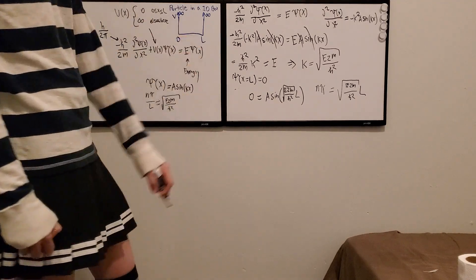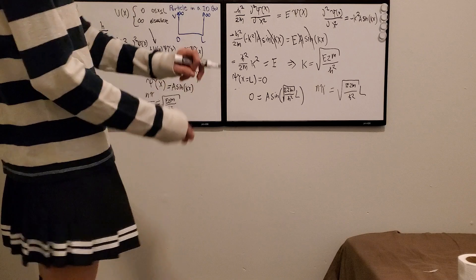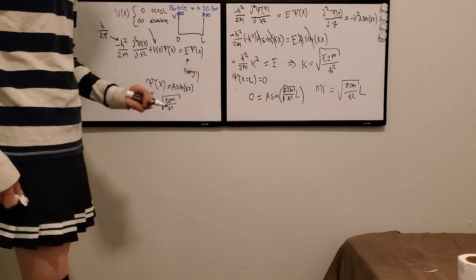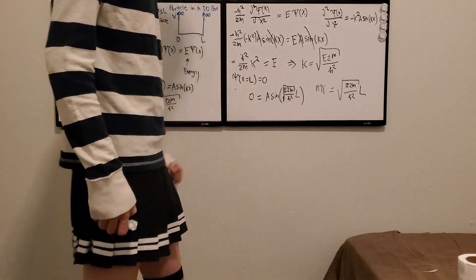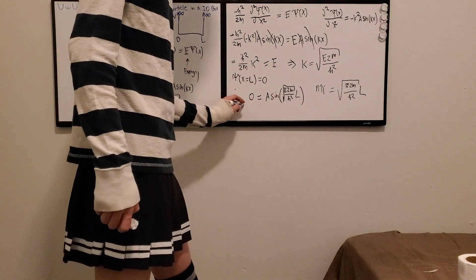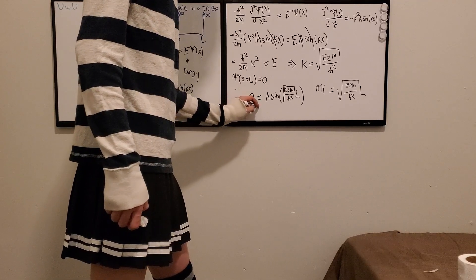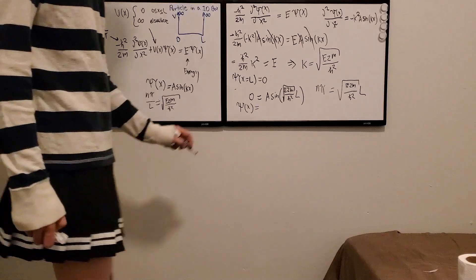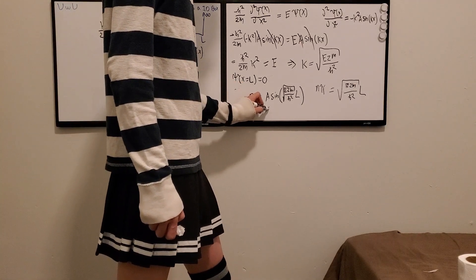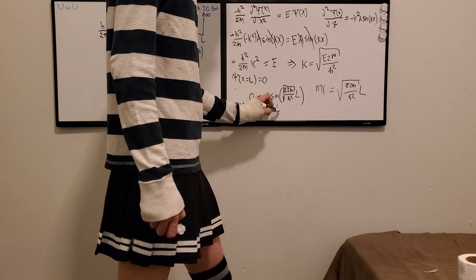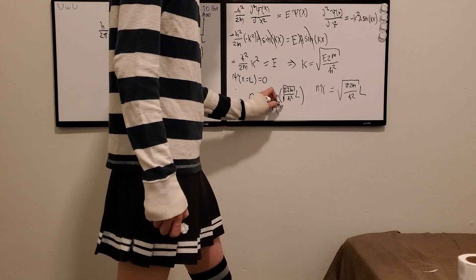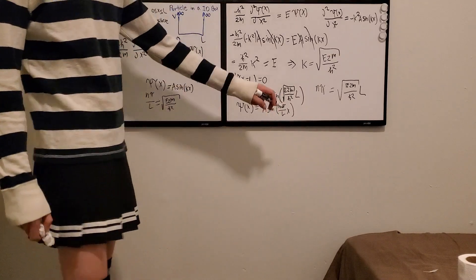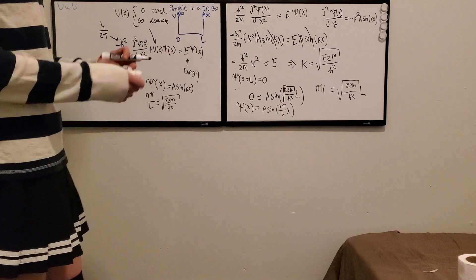We can plug this back in for K in our wave function equation. So instead of that messy expression, we get psi of X is equal to A sine of N pi over L times X. And there we go — we're basically done. We just have one more thing to do.